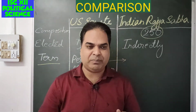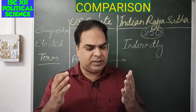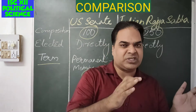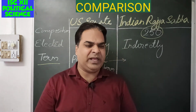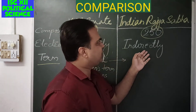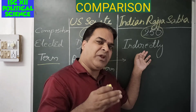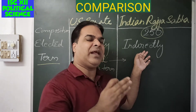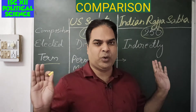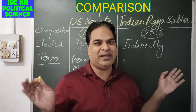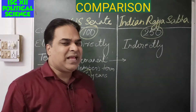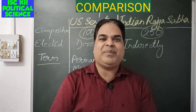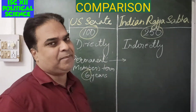Now comparing legislative powers: the House of Representatives along with the Senate enjoy co-equal powers, just as Lok Sabha and Rajya Sabha enjoy co-equal powers in terms of ordinary bills. However, regarding money bills, in the Indian Parliament a money bill can only be introduced in Lok Sabha, not in Rajya Sabha. Rajya Sabha can only keep the bill for 14 days, after which it is deemed passed. In the US, though a money bill is introduced in the House of Representatives, the final shape of the money bill is decided by the Senate.